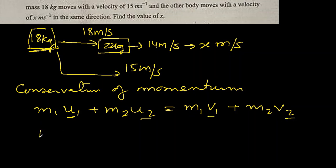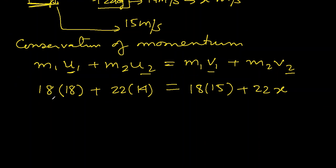We know everything, so 18 times 18 plus 22 times 14 equals 18 times 15 plus 22 times x. So we can see x is the only unknown parameter here. This will be 324 plus 308 equals 270 plus 22x.